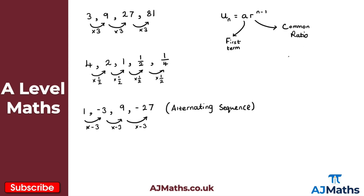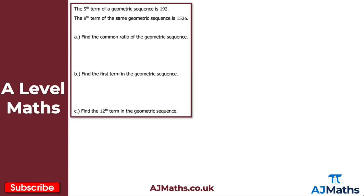Now let's look at a couple of practice questions. In question one, the fifth term of a geometric sequence is 192, and the eighth term of the same sequence is 1536. For part a we need to find the common ratio. We use the formula for the nth term: uₙ = arⁿ⁻¹.